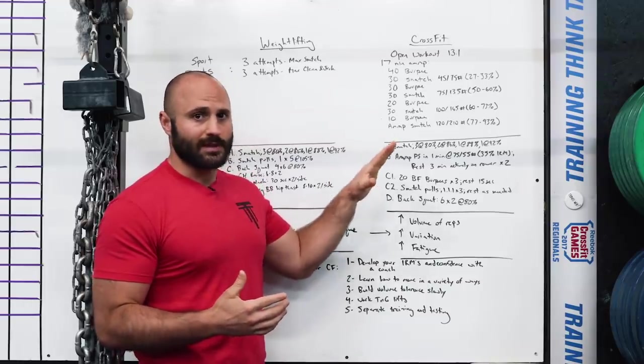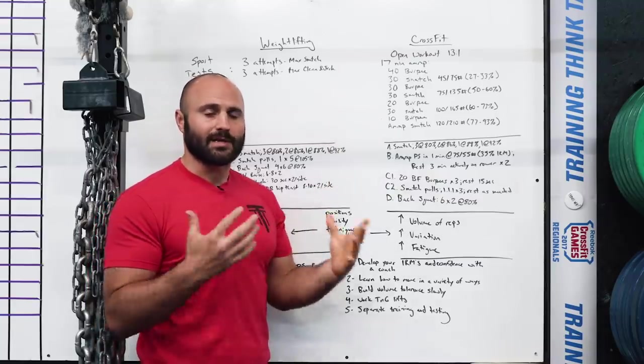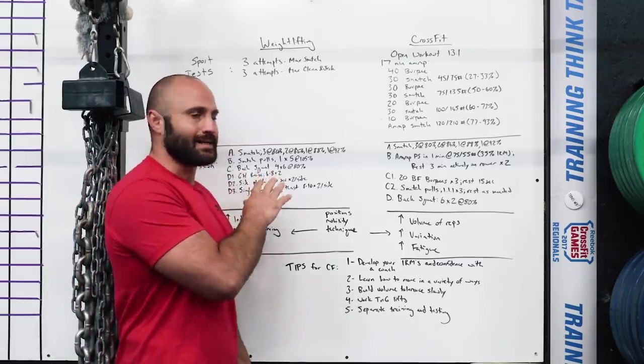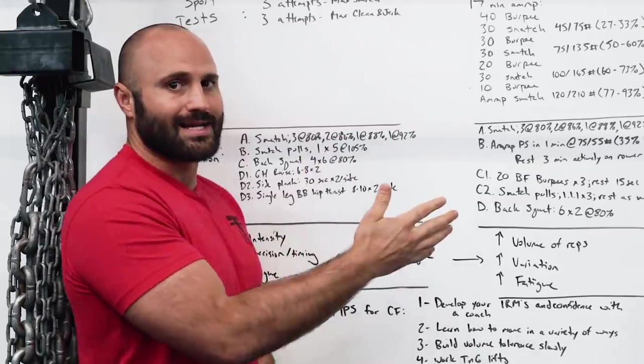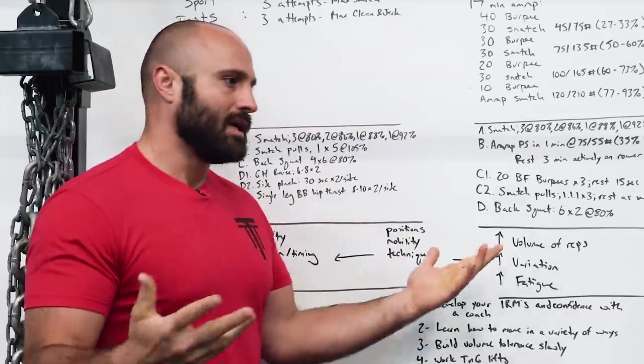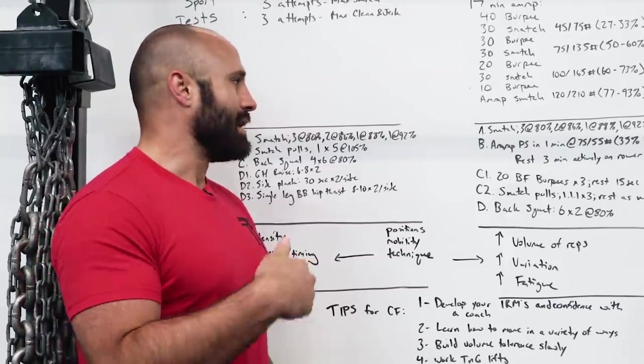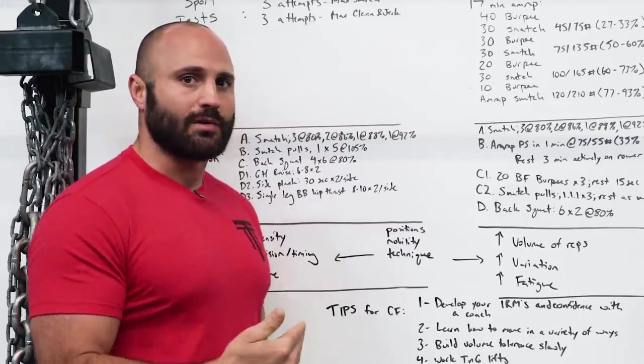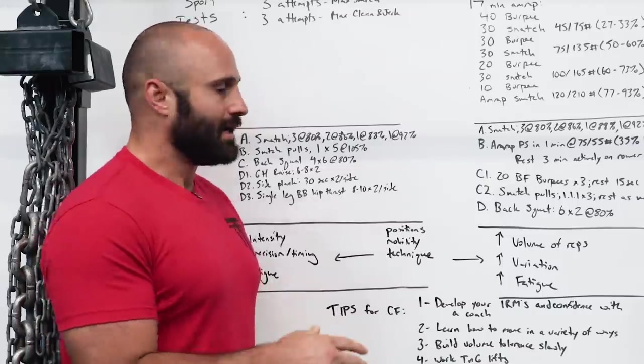I'm going to focus most on CrossFit because I think CrossFit is where you need to apply different training principles. This is an example training session for weightlifting. Three snatches at 80%, two at 86%, one at 88%, one at 92%. For all those lifts, you're going to rest as needed between. You do a rep at 80%, you might sit down in a box and rest two to three minutes. Then you're going to go up in weight, working on making sure that is explosive, tight, and precise as possible.